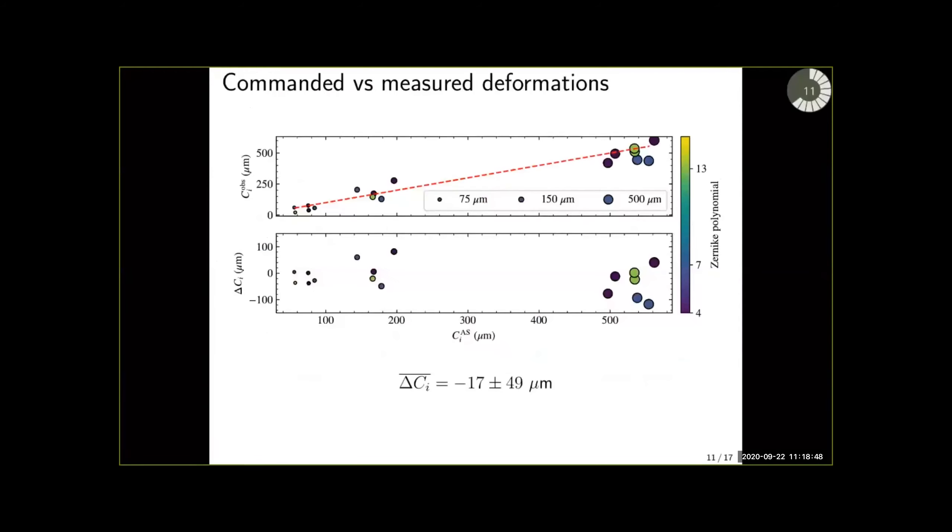This is shown here on the top panel where we have on the y-axis the measured deformation and on the x-axis the deformation introduced with the active surface. What we see are circles of different sizes and colors. In this case the colors show different kinds of deformations and their sizes show the amplitude of these deformations.